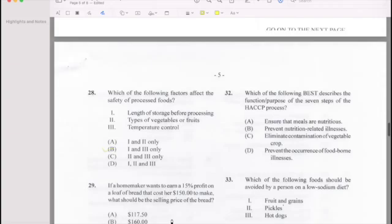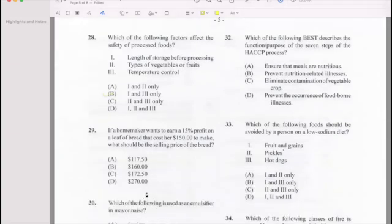Number 29: If I want to make a 150% profit on a loaf of bread that costs $150 to make, what is the selling price? Answer is C.